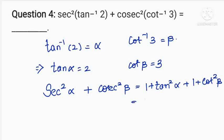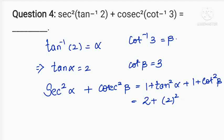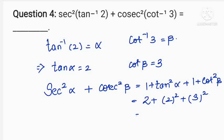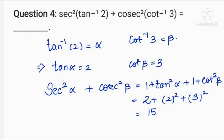So 1 plus 1 gives 2, tan squared alpha equals 4 (since tan alpha = 2), and cot squared beta equals 9 (since cot beta = 3). Altogether we get 2 plus 4 plus 9, which equals 15. That is the value of the given expression.